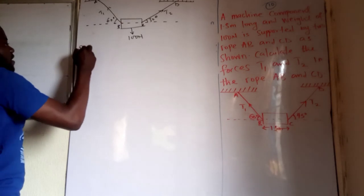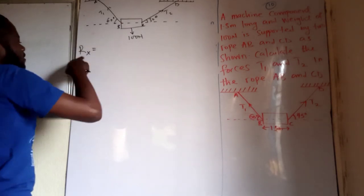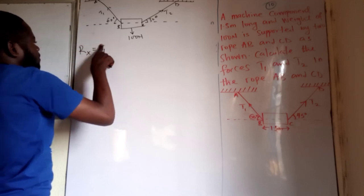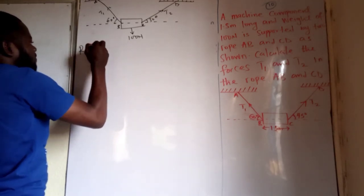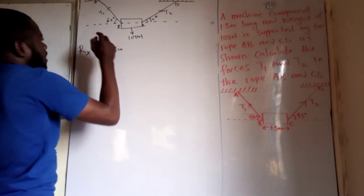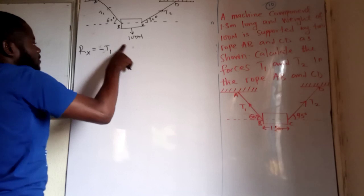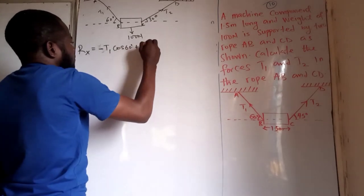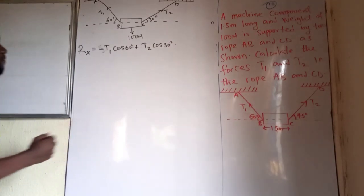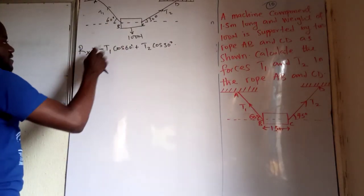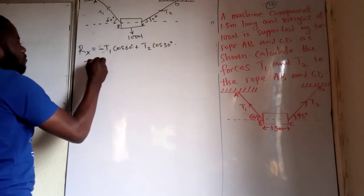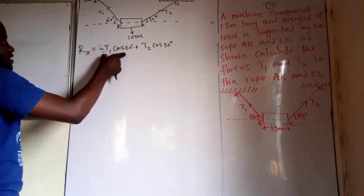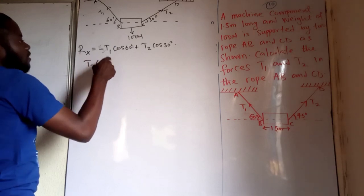Let's resolve these forces into components. The horizontal component: T1 is negative because it points toward the negative direction, giving negative T1 cos 60 degrees. Plus the horizontal component of the other force: T2 cos 30 degrees equals zero at equilibrium.